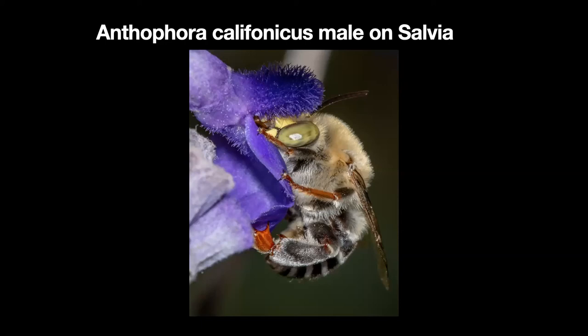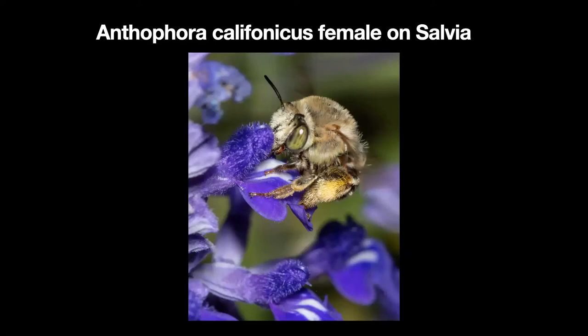Here's one close up on a salvia flower, and here's a female. An interesting thing: when young females are first out early in the season, you'll see them come to flowers for several days with no pollen at all. That's because they're in the process of making the nest first — they'd have no place to put the pollen until the nest is completed. Sometimes that might take several days on some species.